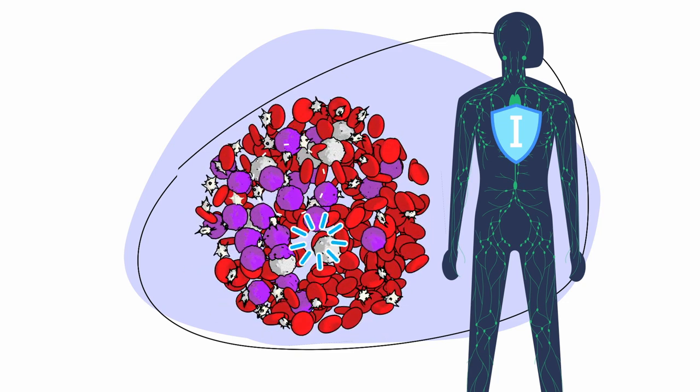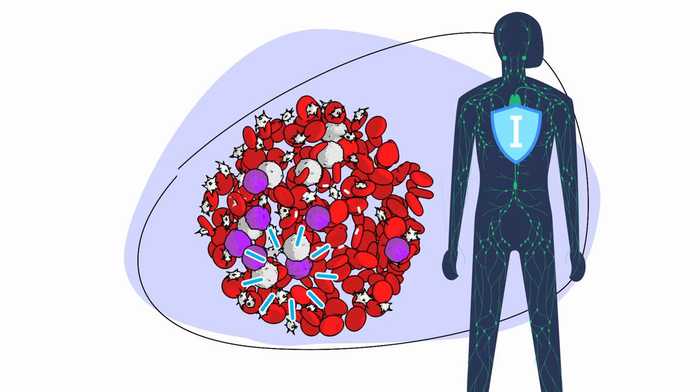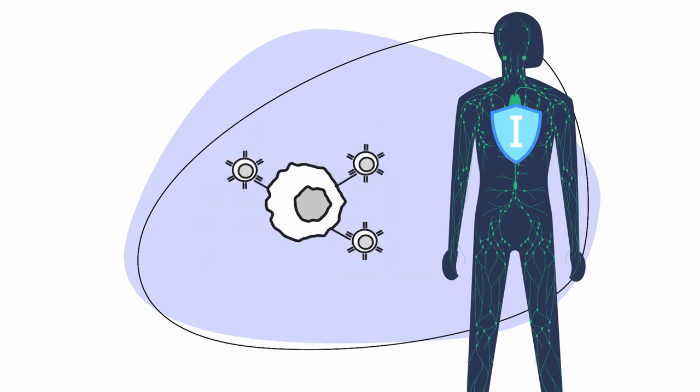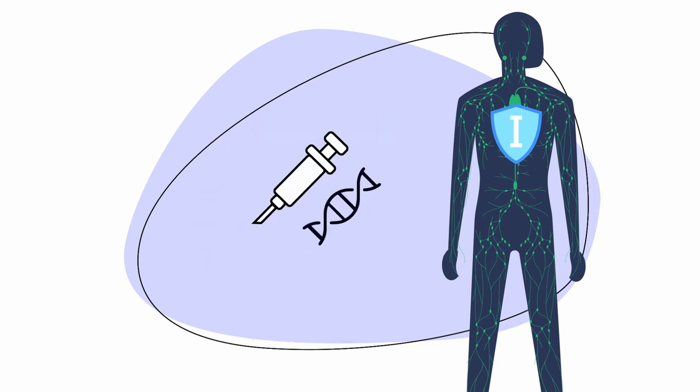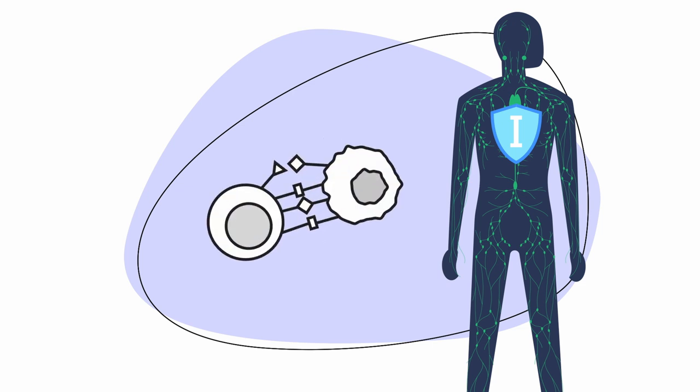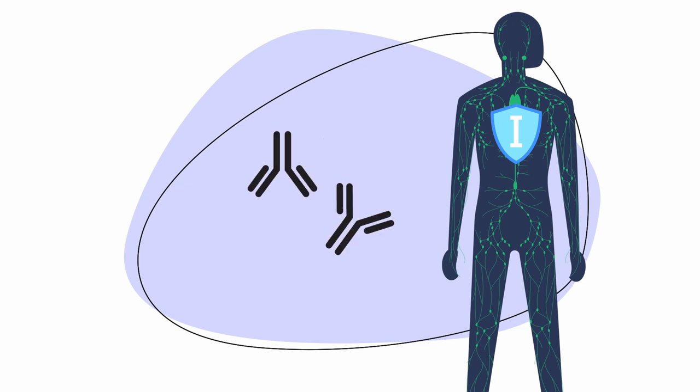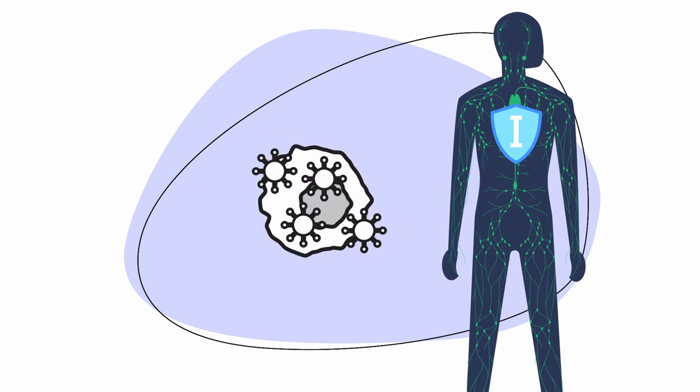The five main types of immunotherapies used to treat blood cancers are cell-based treatments, vaccines, checkpoint inhibitors, antibodies, and viruses.